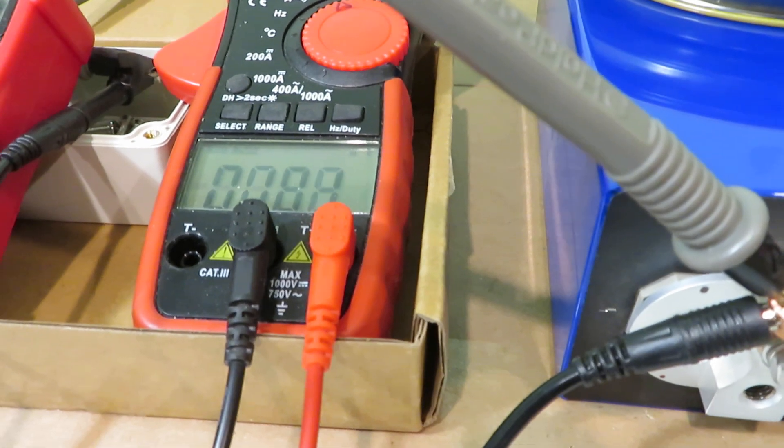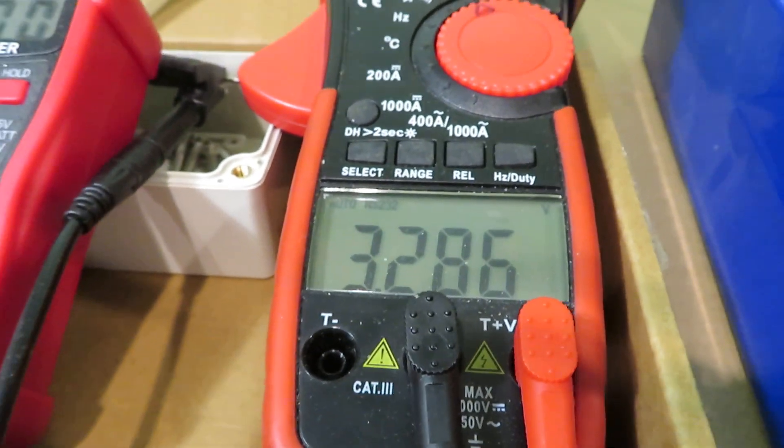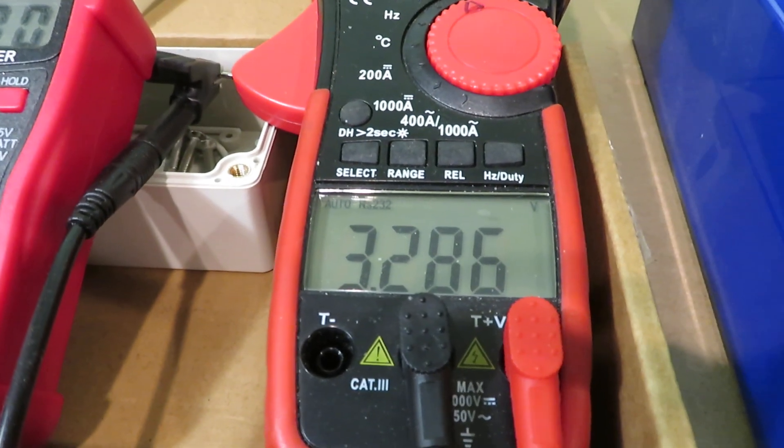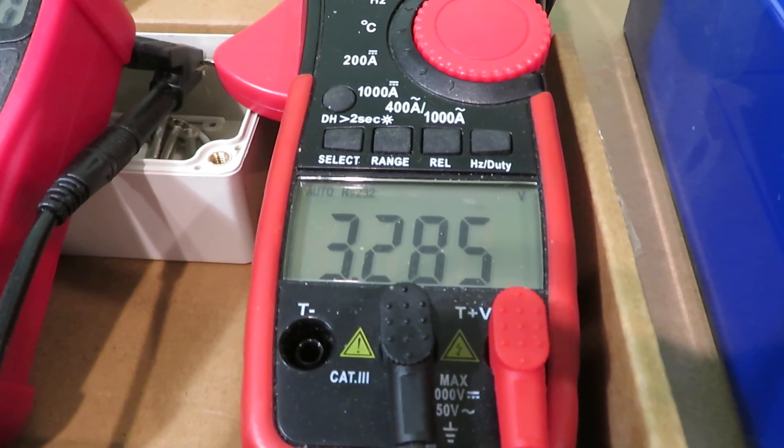And if we take a look at the aluminum casing, I'm touching the aluminum casing now, it's also 3.285, or 2.8, 3.286 volts.